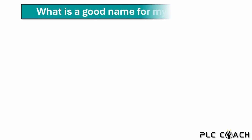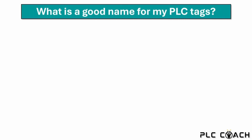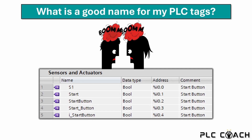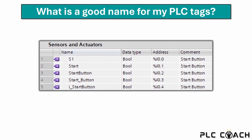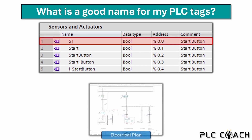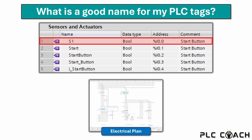At the end of the video I want to share some important insights. Let's answer the question: what is a good name for my PLC tags? This is a topic that has been debated since PLCs were invented. Here are some examples of PLC tags for a start button. Some programmers use the component name from the electrical plan as a PLC tag — in my opinion this isn't a good idea, as names like 'S1' don't provide a clear and meaningful description. It makes the program hard to read and understand.